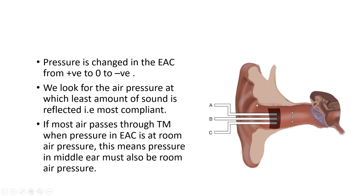In tympanometry, a probe is inserted into the external auditory canal that smoothly fits, and then we create an airtight seal. The probe that we use consists of three chambers: chamber A, B, and C. Chamber A is an oscillator that produces a sound of 226 Hz frequency. Some resistance is provided by the tympanic membrane — some sound is absorbed and transmitted while some is reflected back. The reflected sound waves are recorded by chamber C, which is a microphone. This records how much of the sound waves are reflected.